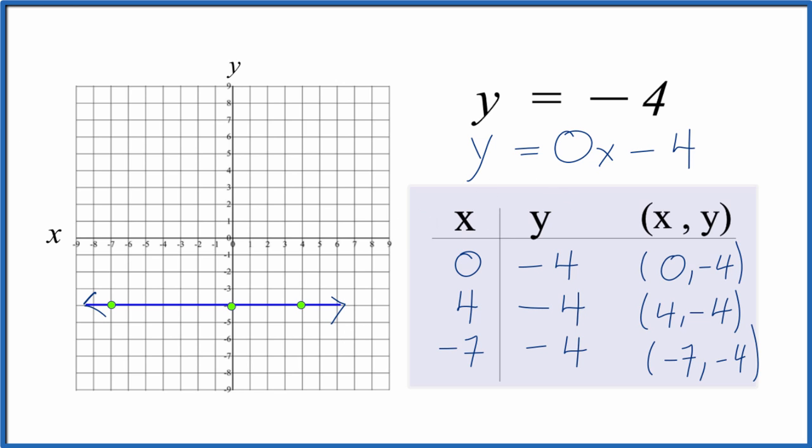You could also think about this with slope-intercept form here. We already have that in slope-intercept form. So we have the b, that's the y-intercept, is negative 4. That's right here where we cross the y-intercept. And then m, the slope, is 0. So that means it doesn't rise or run. It just stays right along this horizontal line here.